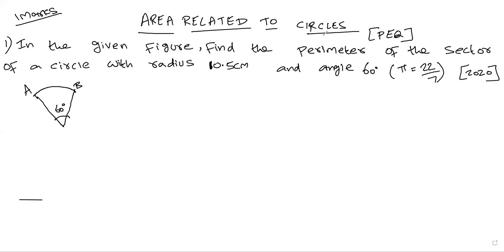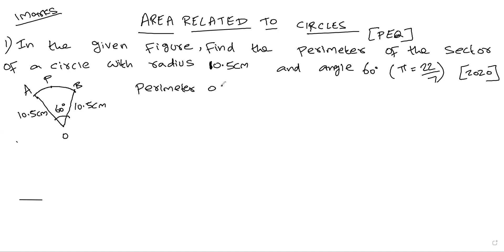One more question area related to circles — the public exam first question. In the given figure, find the perimeter of the sector of a circle with radius 10.5 centimeters and angle 60 degrees. Pi value is 22 by 7. The radius given is 10.5 centimeters. They are asking for the perimeter value, so we add all the values: OA, the arc, and the total.